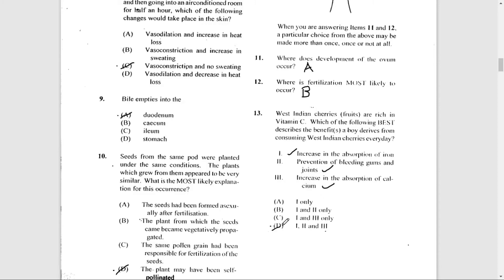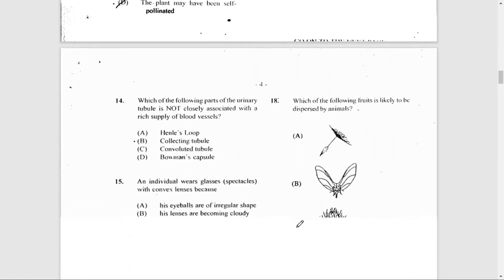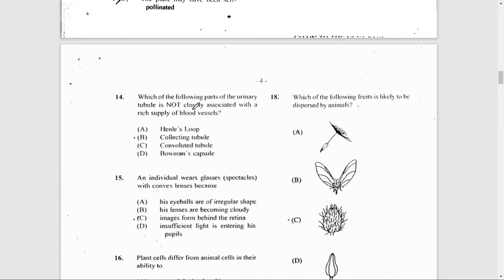Number 14: Which of the following parts of the urinary tubule is not closely associated with a rich supply of blood vessels? That would have to be the collecting duct. Around the Henley's loop or the loop of Henle you have the peritubular capillaries. The convoluted tubules, both distal and proximal, also have capillaries surrounding them. The Bowman's capsule has the glomerulus inside, which is a knot of capillaries. So the only part here not associated with blood vessels is the collecting duct or collecting tubule.